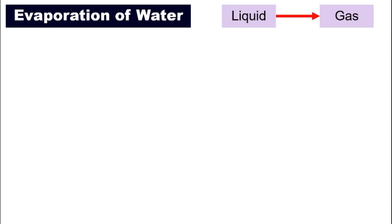What is the meaning of evaporation? It is a process when the liquid turns into gas. So evaporation of water happens when water changes into water vapor.